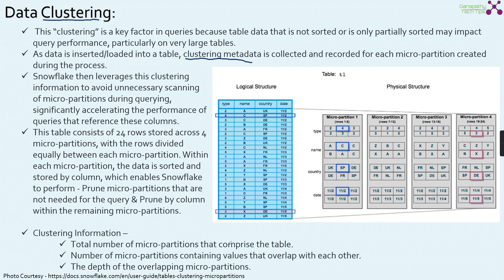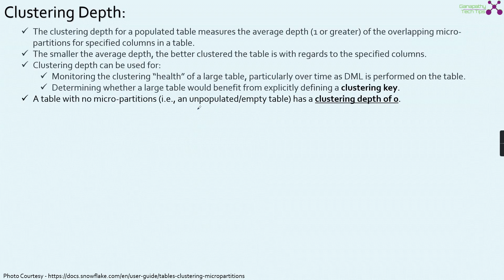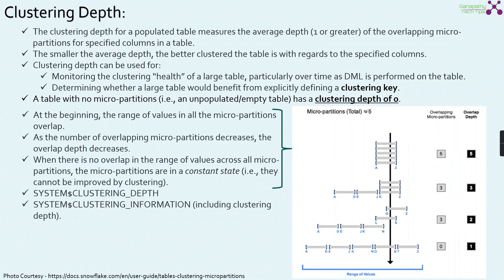Snowflake stores the total number of micro partitions comprising the table, the number of micro partitions containing values that overlap with each other, and the depth of the overlapping micro partitions. There is an important concept called clustering depth. The clustering depth for a populated table measures the average depth — one or greater — of the overlapping micro partitions for specified columns. A smaller average depth means better clustering in the table with regards to the specified columns.